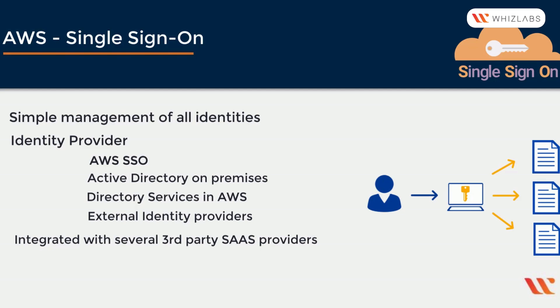AWS SSO can integrate in minutes with third-party software-as-a-service providers like Concur, Dropbox, Box, Salesforce, Office 365, and several other hundreds of providers that AWS has in its marketplace.